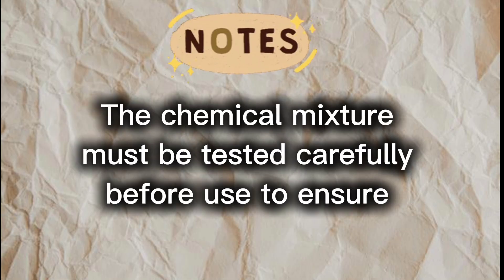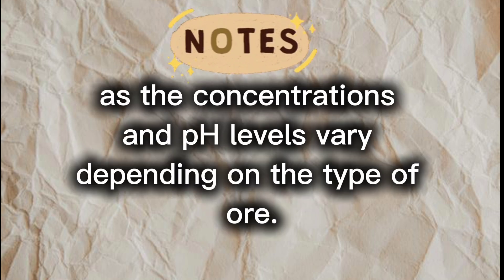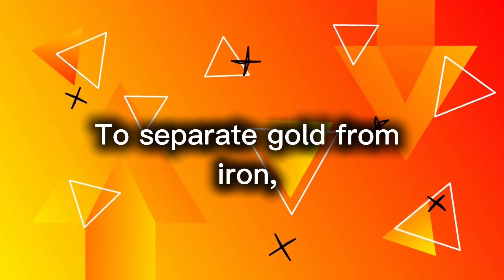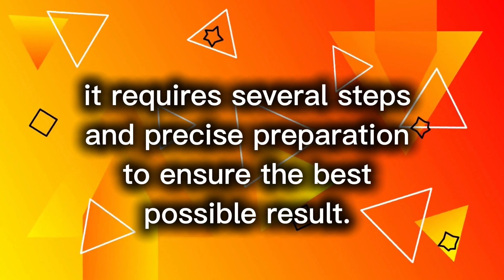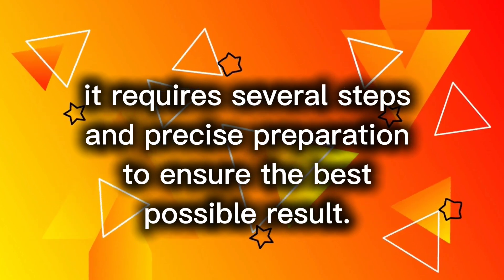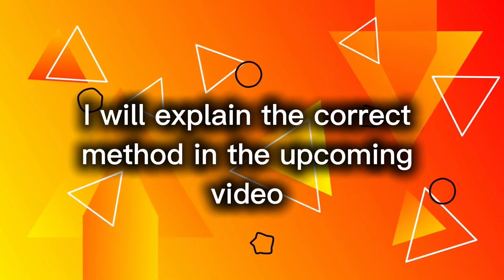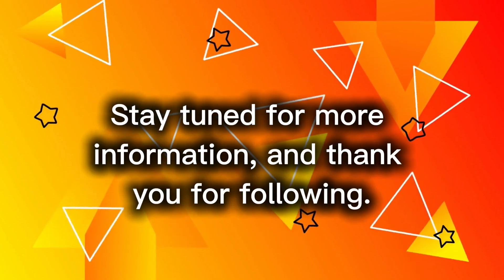The chemical mixture must be tested carefully before use to ensure its efficiency in separating gold from iron effectively, as the concentrations and pH levels vary depending on the type of ore. To separate gold from iron, it requires several steps and precise preparation to ensure the best possible result. I will explain the correct method in the upcoming video. Stay tuned for more information, and thank you for following.